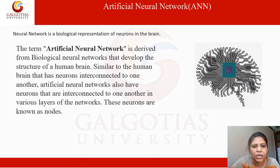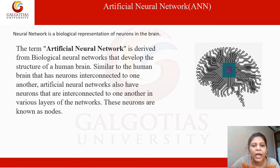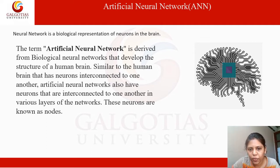The term artificial neural network is derived from biological neural networks that develop the structure of the human brain. Similar to the human brain which has neurons that are interconnected to one another, artificial neural networks also have neurons that are interconnected to one another in various layers of the network. These neurons are also known as nodes.